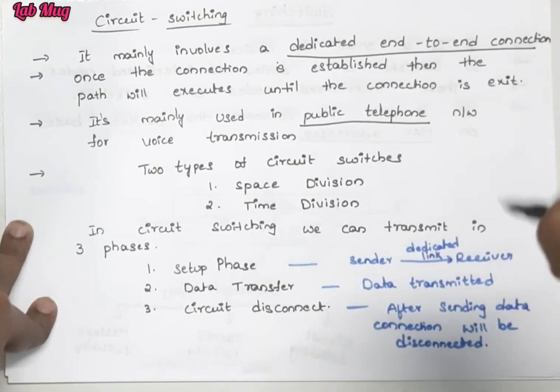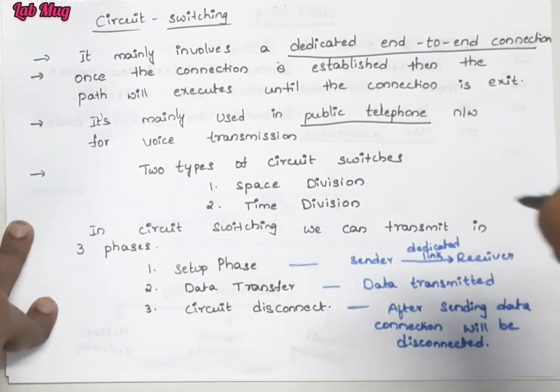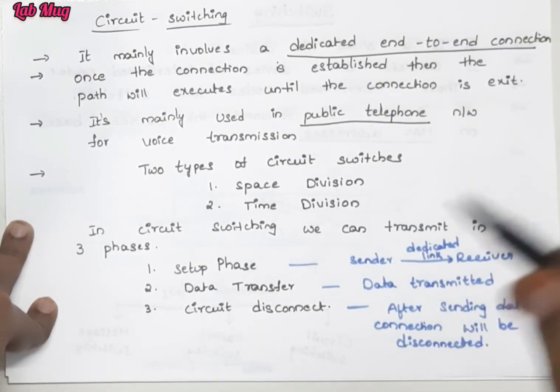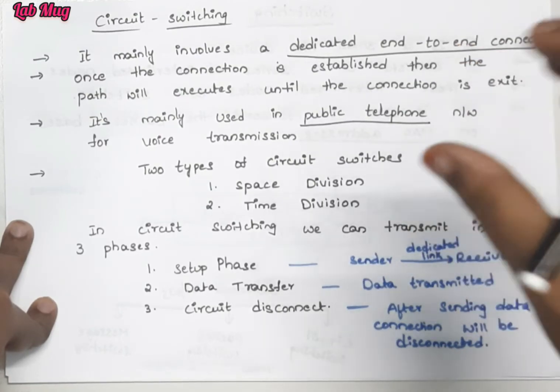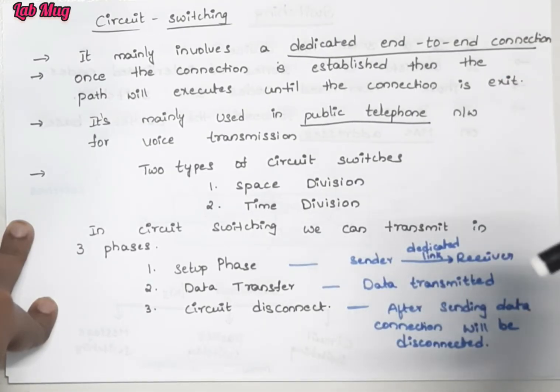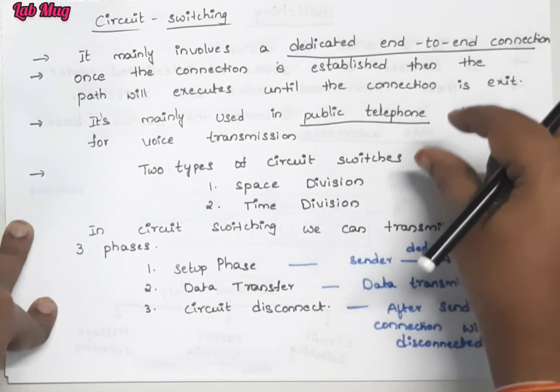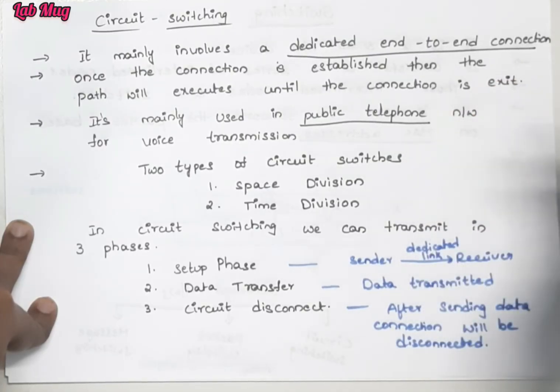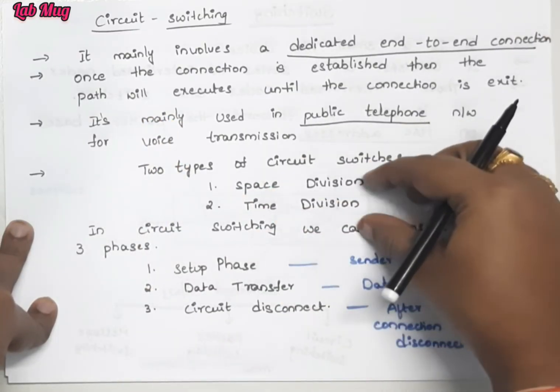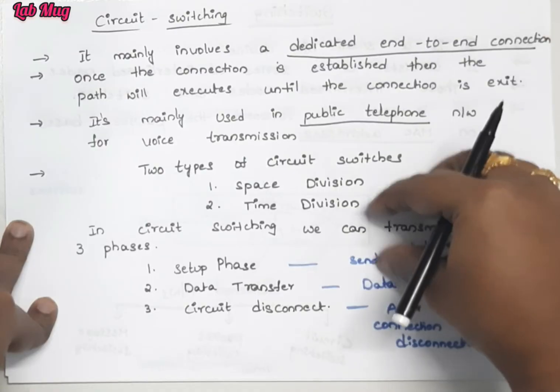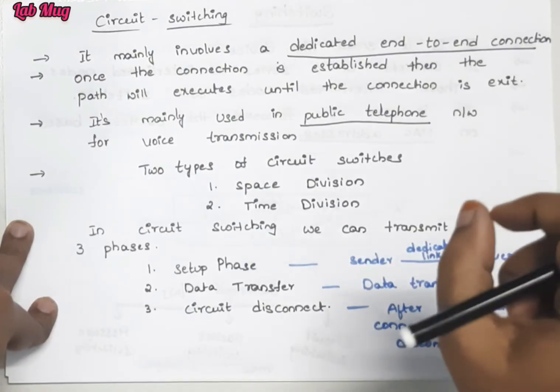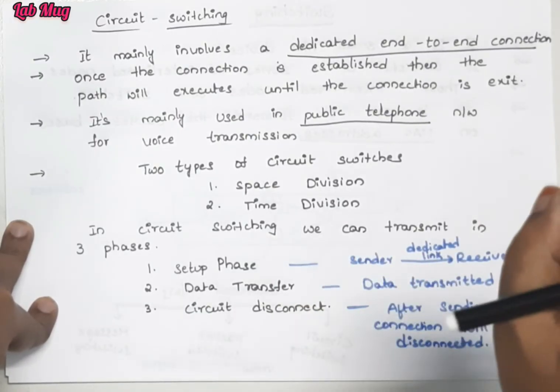The main example is public telephone network - when we make landline calls. First we establish the connection by calling their number. When they pick up after the first ring, then our conversation starts. Similarly, in public telephone networks we use circuit switching. Voice transmission works the same way in old type situations. Circuit switching has two categories: space division multiplexing and time division multiplexing.